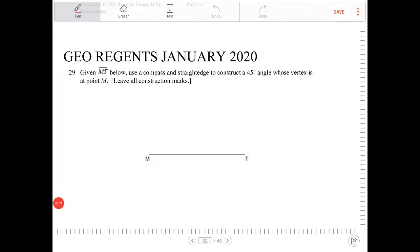Given MT below, use a compass and straight edge to construct a 45 degree angle whose vertex is at point M. Leave all construction marks.